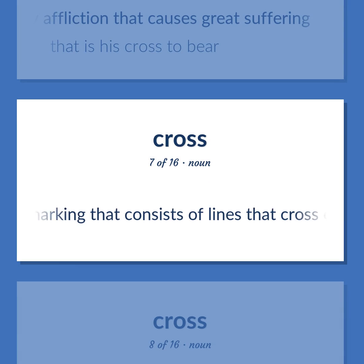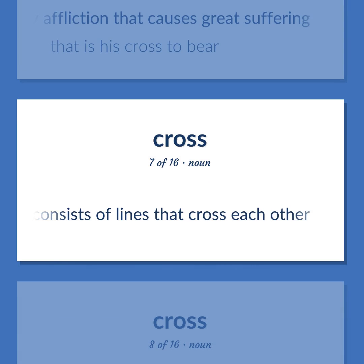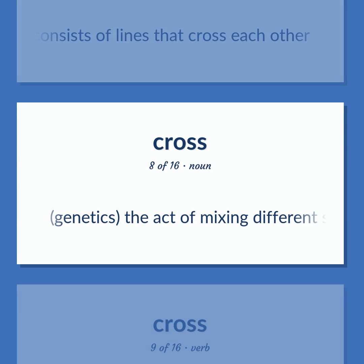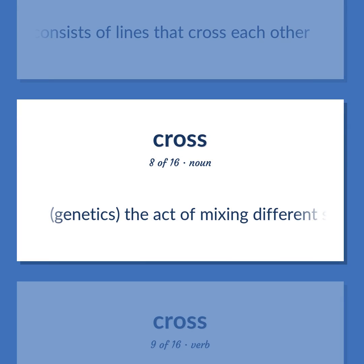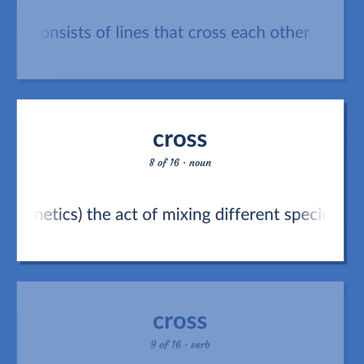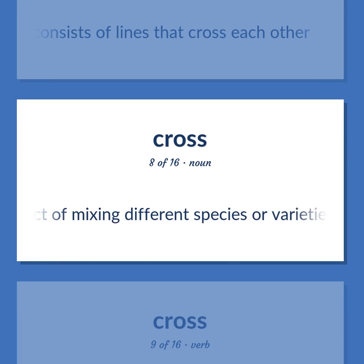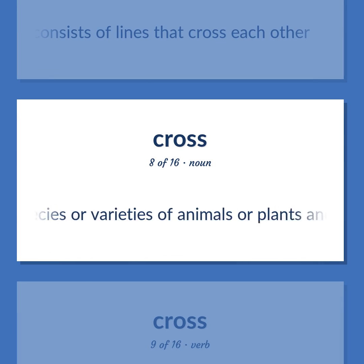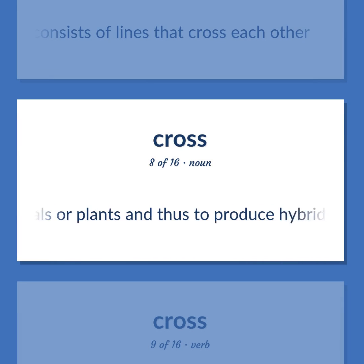Cross: A marking that consists of lines that cross each other. Genetics: The act of mixing different species or varieties of animals or plants to produce hybrids.